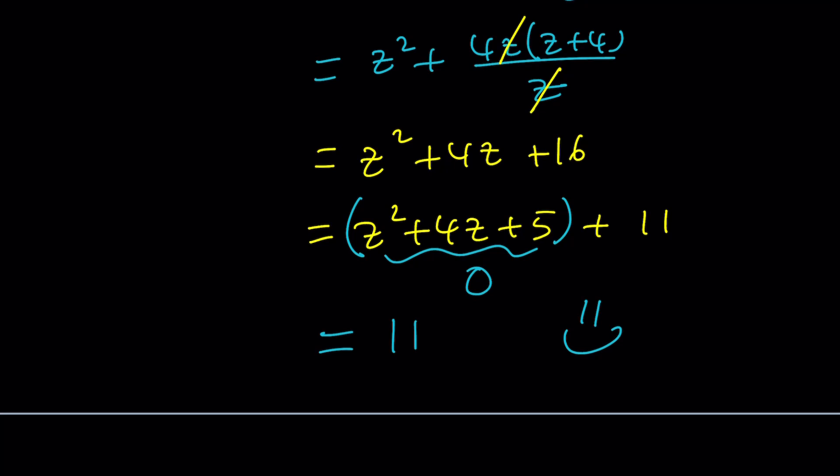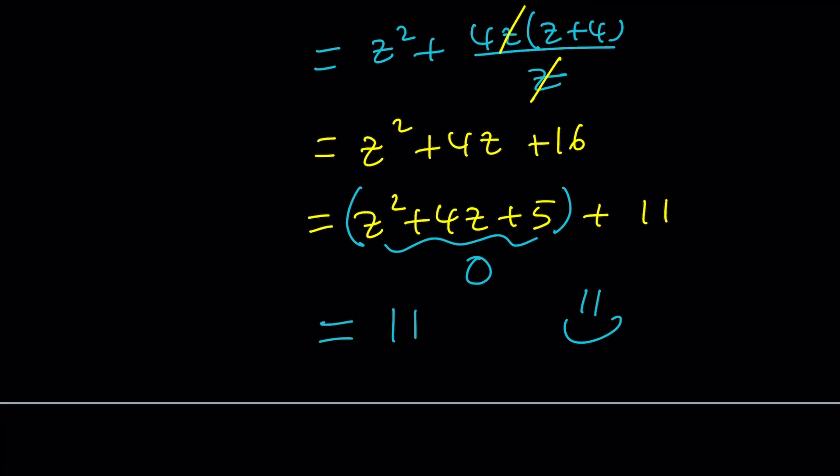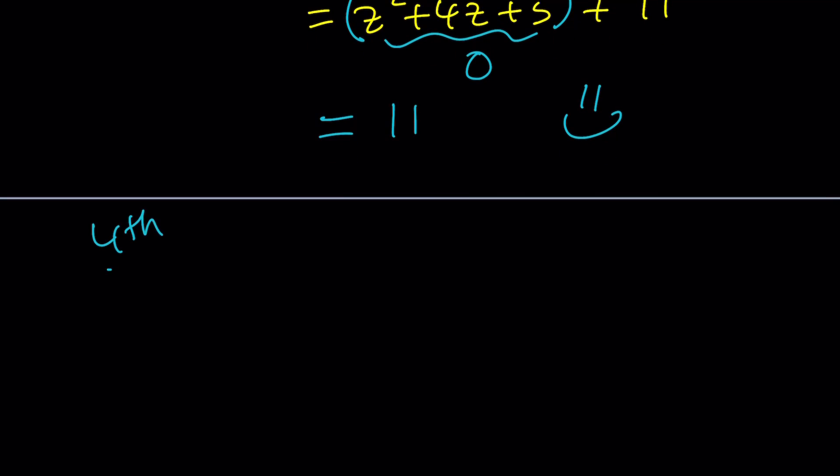But remember at the beginning I said I'll be presenting at least three methods. Well, wait a minute. Is there a fourth way to do it? Maybe. Let's find out. So my fourth attempt. So how can we come up with a fourth way to do this? Here's the thing. I have z squared plus 4z plus 5 equals 0.